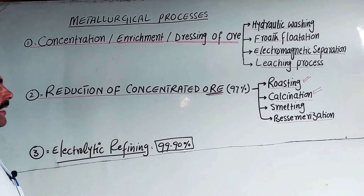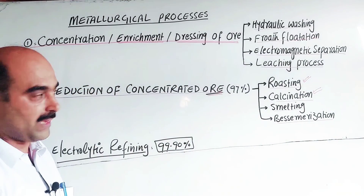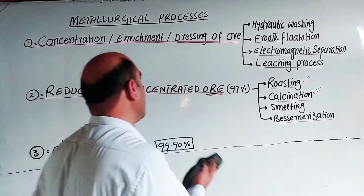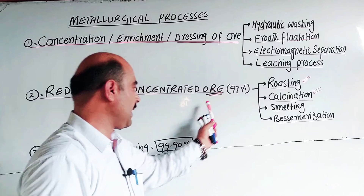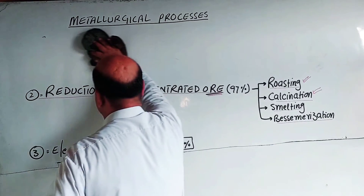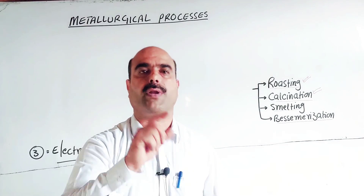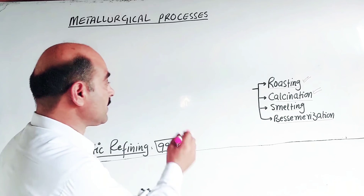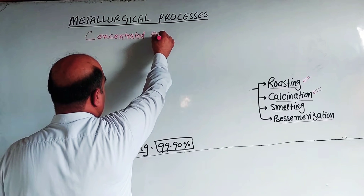After concentration of ore, the ore still contains metallic and non-metallic impurities such as dust and sand. The concentrated ore then goes through further processing. The next step in the process is roasting.